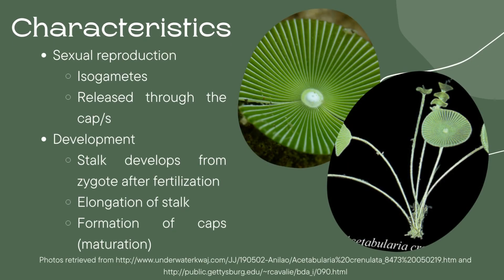Sexual reproduction is exhibited by Acetabularia creniolata. This species produces isogamous gametes, which are then released through the cap or caps of the organism. Upon fertilization, three phases of development proceed. First, the zygote will develop the stalk. Then, this stalk will elongate until the cap or caps are formed at the end of the stalk. Lastly, the algae matures when the nucleus begins to replicate for the formation of gametes, which will then fertilize each other, forming another individual, thus completing the life cycle of the organism.